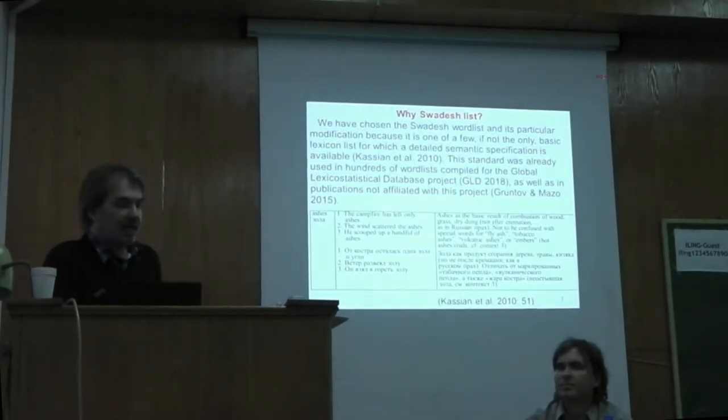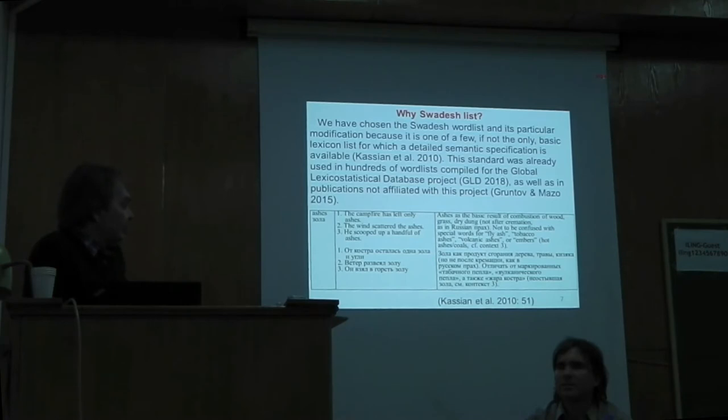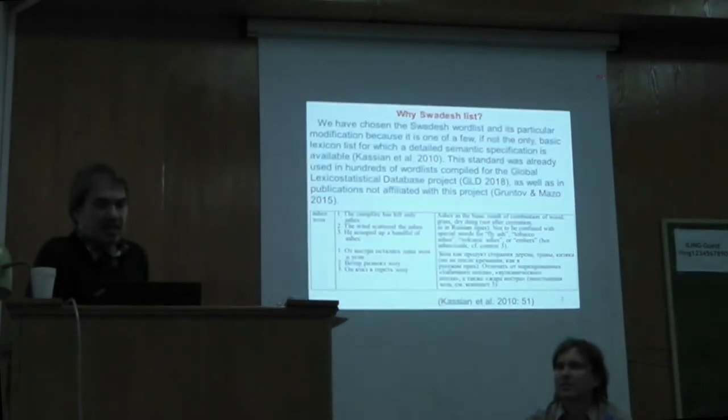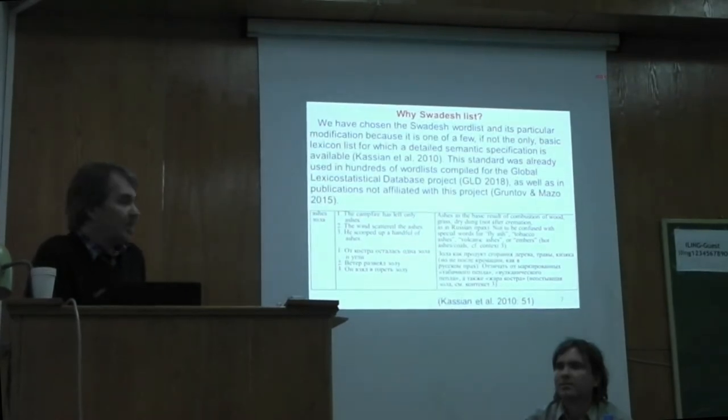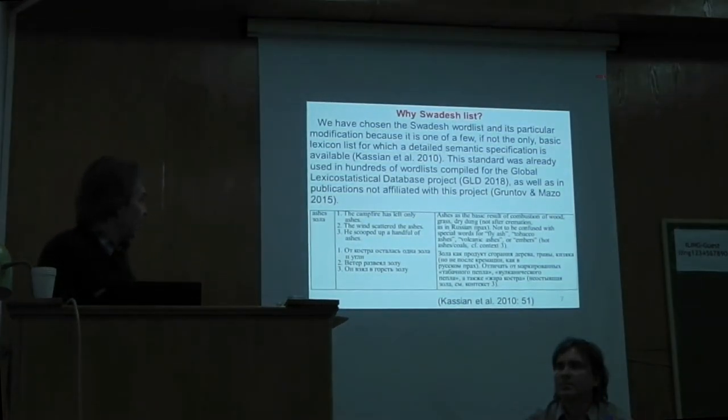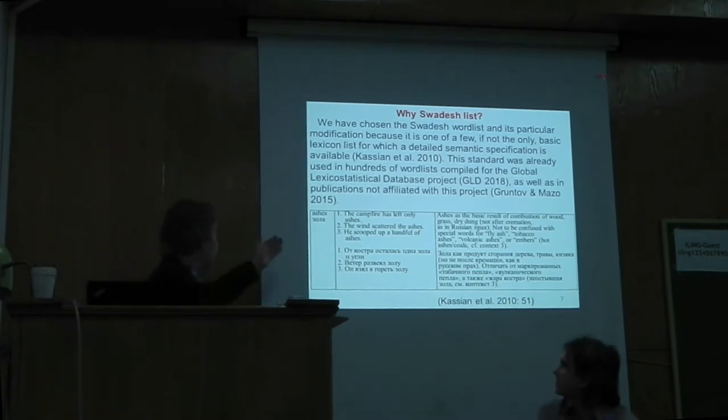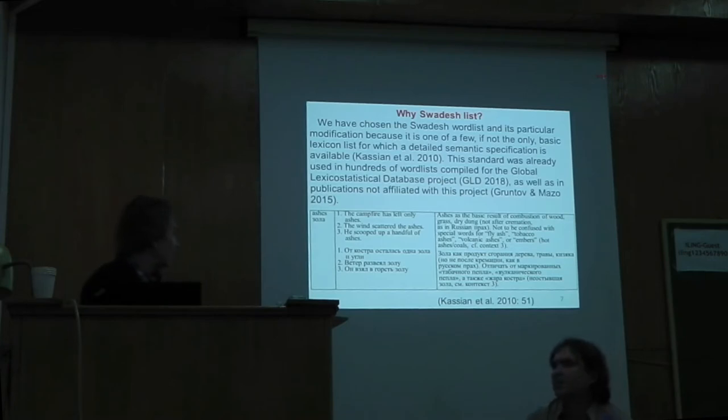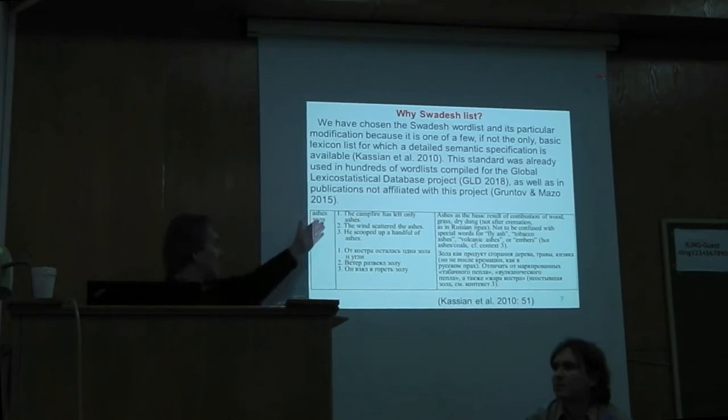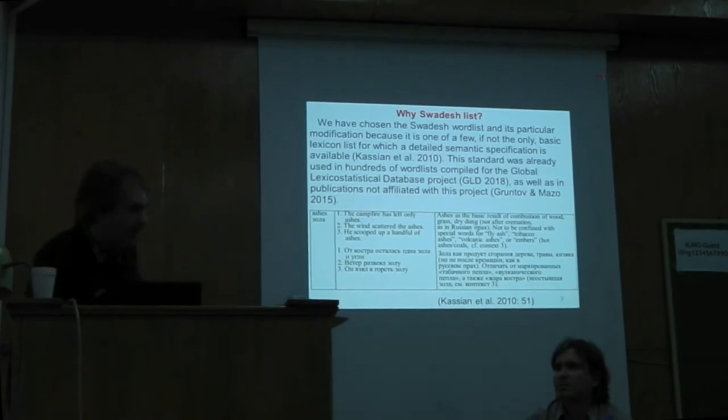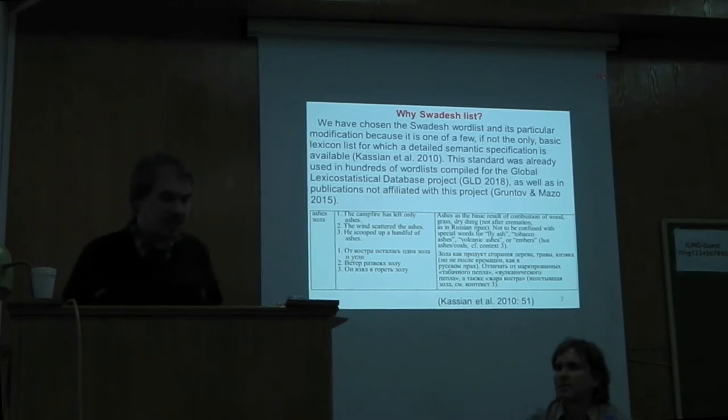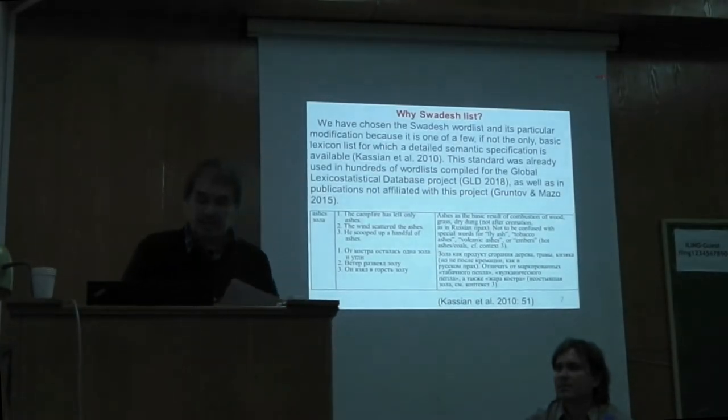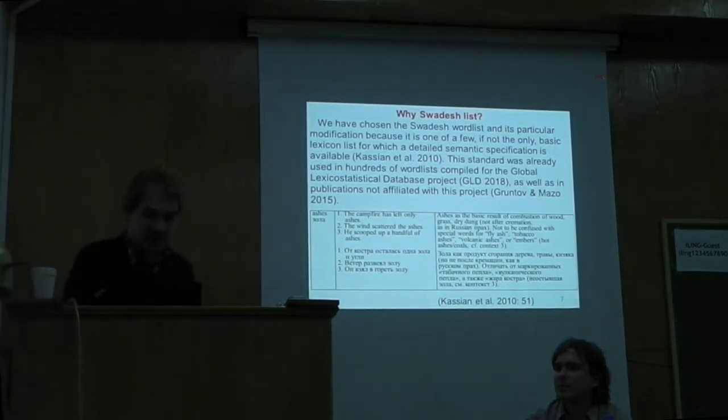Also we can give some additional comments which allow us to narrow this meaning, and of course we can use a context for the same aim. This semantic specification gives all these three possibilities. Here you can see an example for one word from that article - you can see both Russian and English translation, the context with several simple sentences also in Russian and in English, and also additional comments which allow us to choose the correct word. So we decided to use this methodology and from our point of view the result was successful.